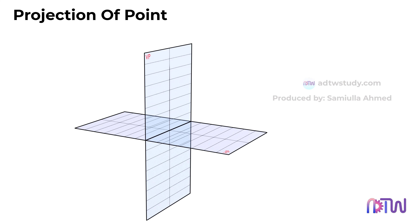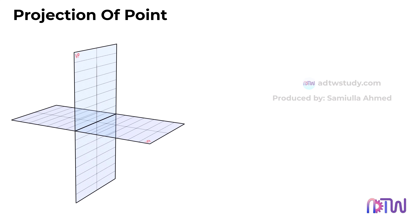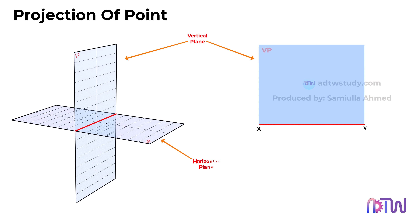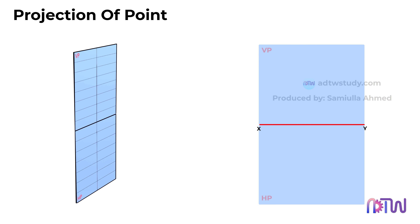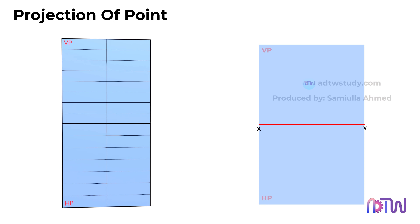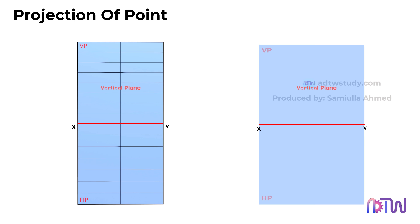Next, we will explore the process of illustrating the front view and top view of a point in a 2D plane when positioned in different quadrants. Begin by drawing a horizontal line representing the xy-axis. The vertical plane in the 3D view is depicted by the region above the xy-line, while the horizontal plane is represented by the area below the xy-line. This is because, to portray views of an object situated in a quadrant, the horizontal plane undergoes a 90-degree clockwise rotation, after which the horizontal plane takes on a new orientation.